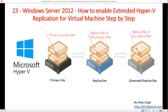In the last video we enabled Hyper-V replication, which is basically a primary and secondary site or primary and secondary server. In this video we are going to focus on extended replication for a virtual machine running on a Hyper-V host.